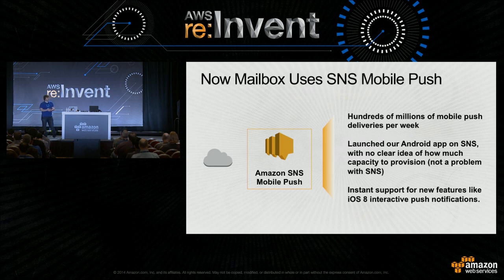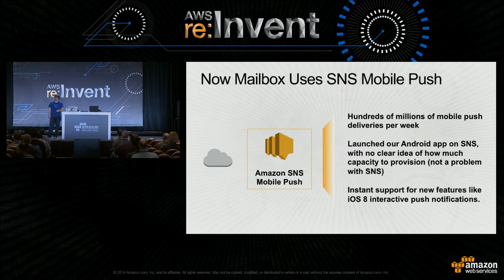We looked at the SNS announcement, talked to AWS folks, and decided to throw away three months of work — and it was the right trade-off. It meant no ongoing DevOps costs, no ongoing development costs, no worrying about iOS 8 API changes or Android launches. Earlier this year we did a silent cutover on iOS and launched Android straight onto SNS. Today we're sending hundreds of millions of pushes per week. We had no idea what Android uptake would be, but we just didn't worry about SNS scaling at all — it was a couple hours of configuration tweaking. The feedback channel for deactivated devices has been profoundly impactful on database read costs. And this past Monday we released our iOS 8 app with interactive push notifications by just changing a couple of configuration parameters.